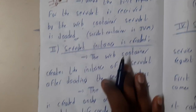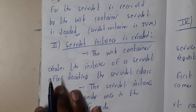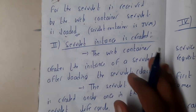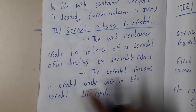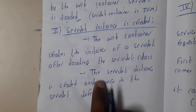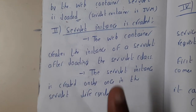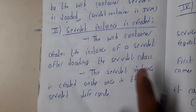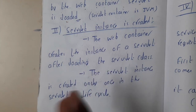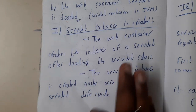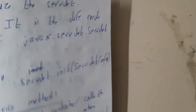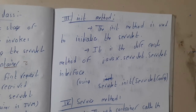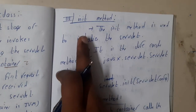The second step is servlet instance creation. The web container creates the instance of a servlet after loading the servlet class. The servlet instance is created only once in the lifecycle — once it is instantiated, you can use it multiple times.